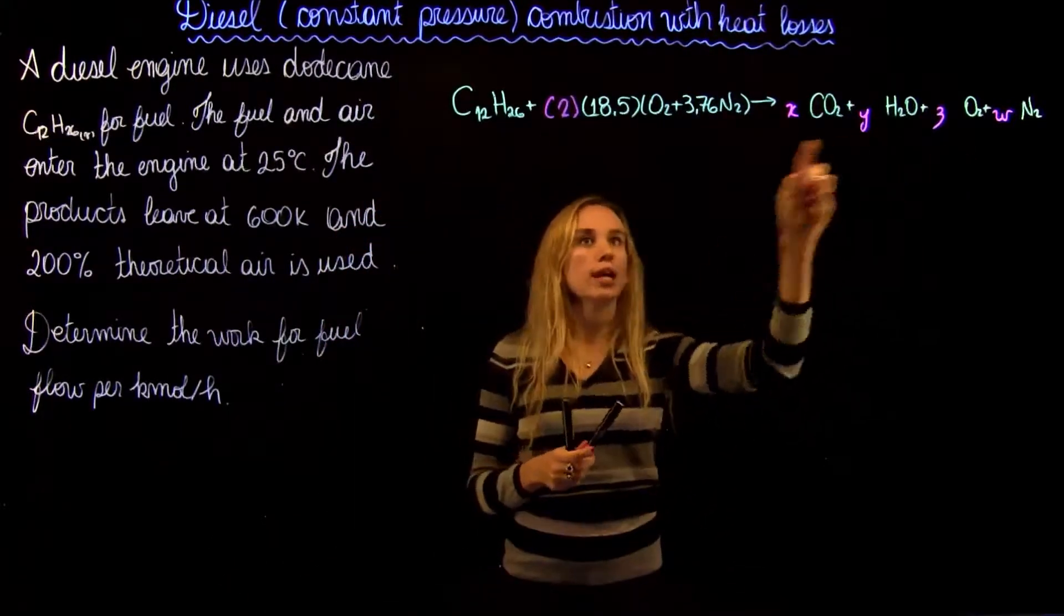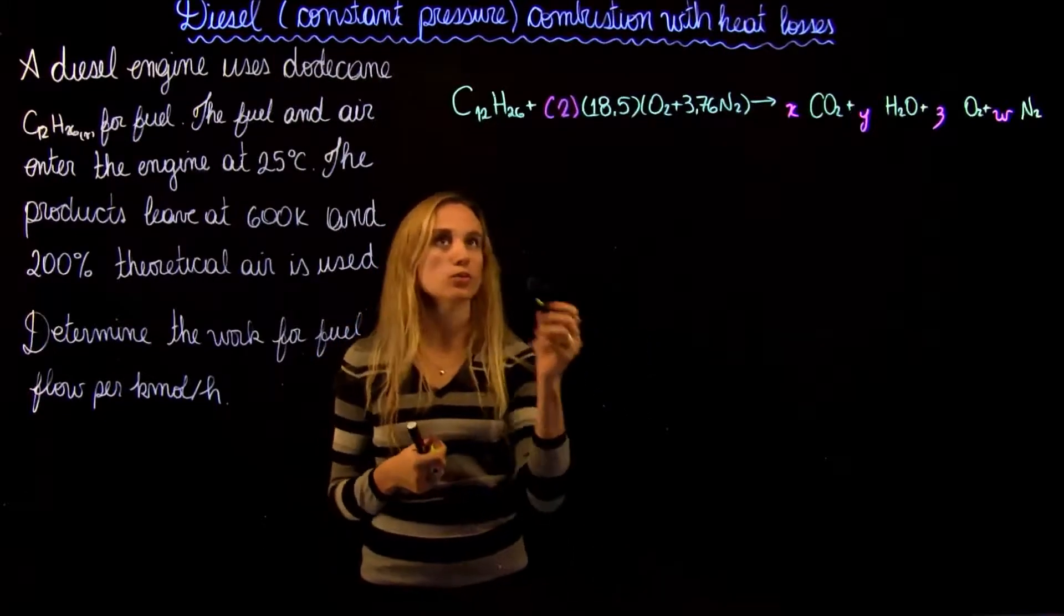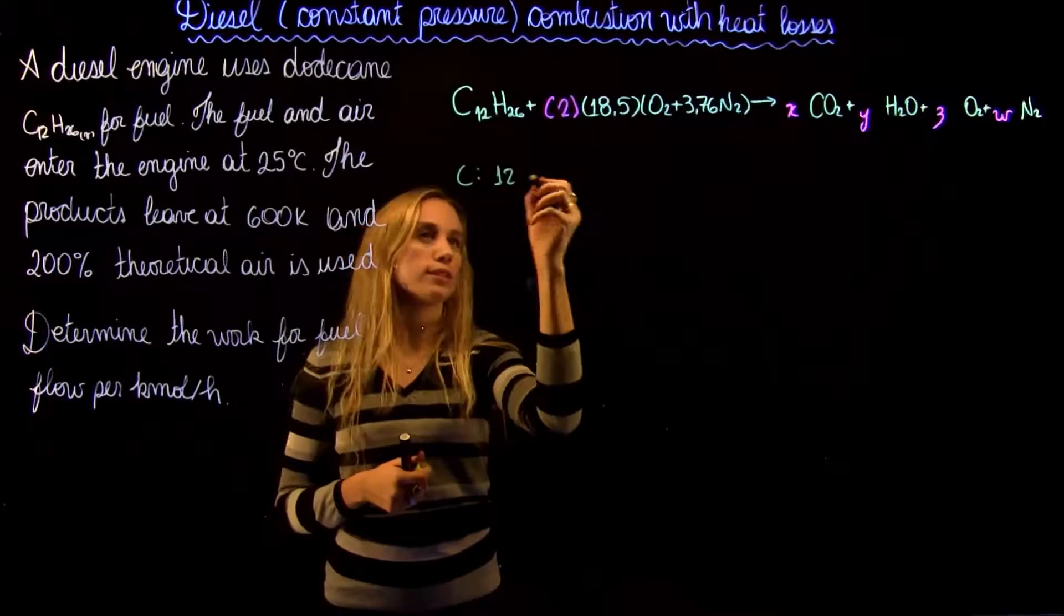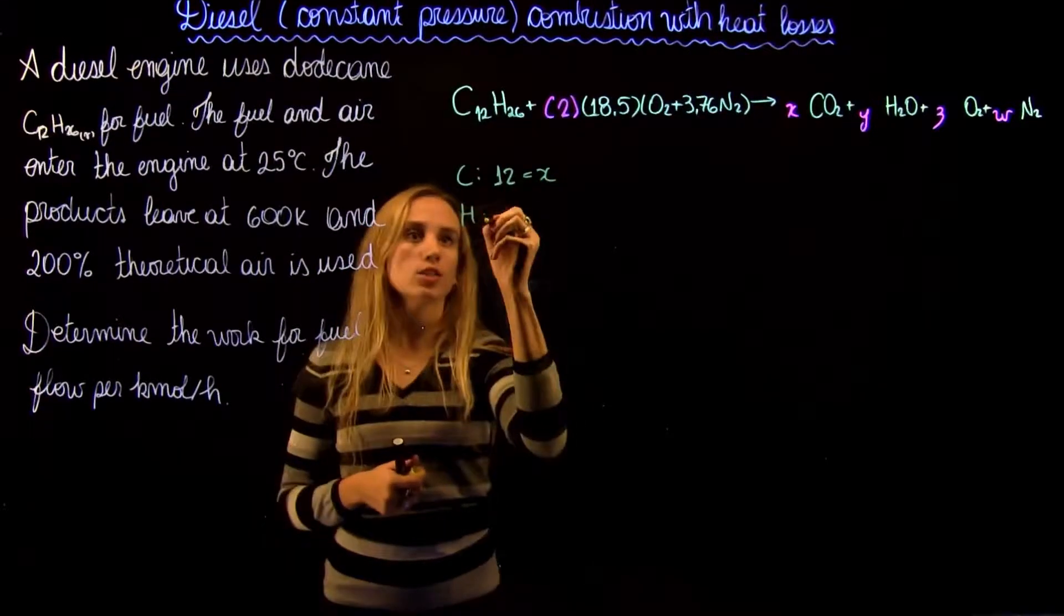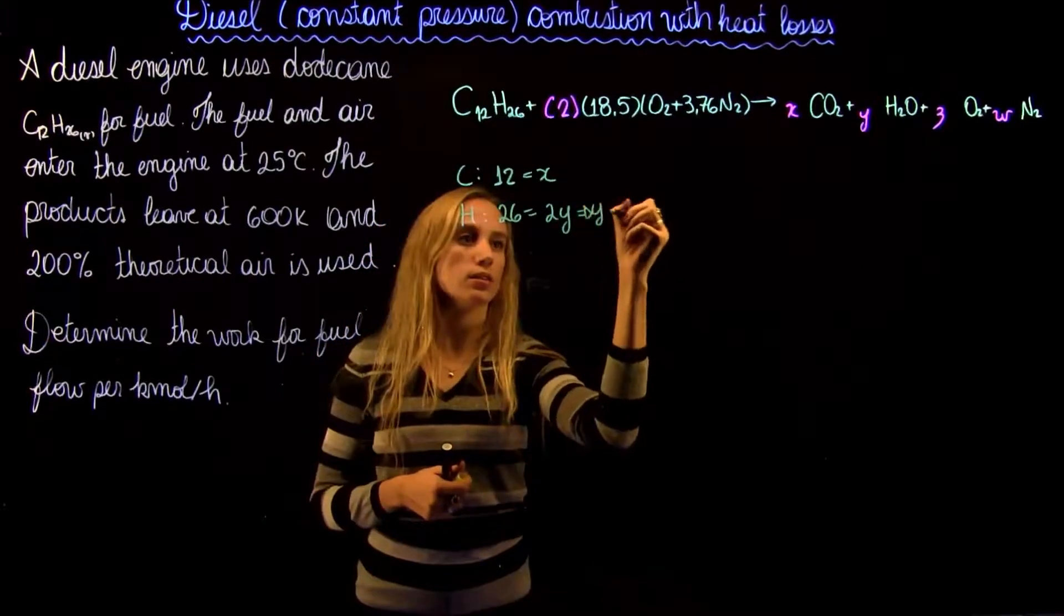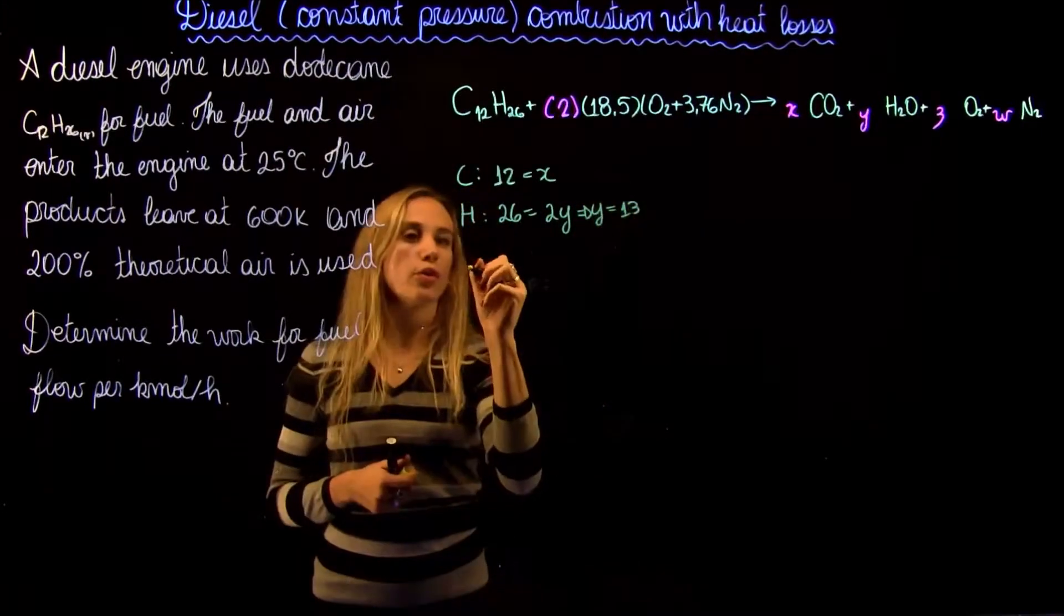Now we're going to have 4 equations so we can actually solve for all our values. If we write for the carbon balance, we're going to have 12 equals x. For hydrogen, we're going to have 26 equals 2y, so y is going to be 13.